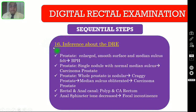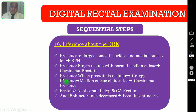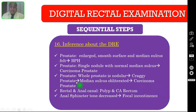Finally, step sixteen: after doing this procedure, tell the result of the digital rectal examination to your examiner. Regarding the prostate: if the prostate is enlarged with a smooth surface and the median sulcus is palpable, this is a case of benign prostatic hyperplasia. If the prostate has a single nodule with a normal median sulcus, this is probably a case of carcinoma prostate, to be confirmed by transrectal ultrasound-guided prostatic biopsy. If the whole prostate is nodular — called a craggy prostate — and the median sulcus is also obliterated, we are likely dealing with carcinoma prostate, also confirmed by transrectal ultrasound-guided biopsy.